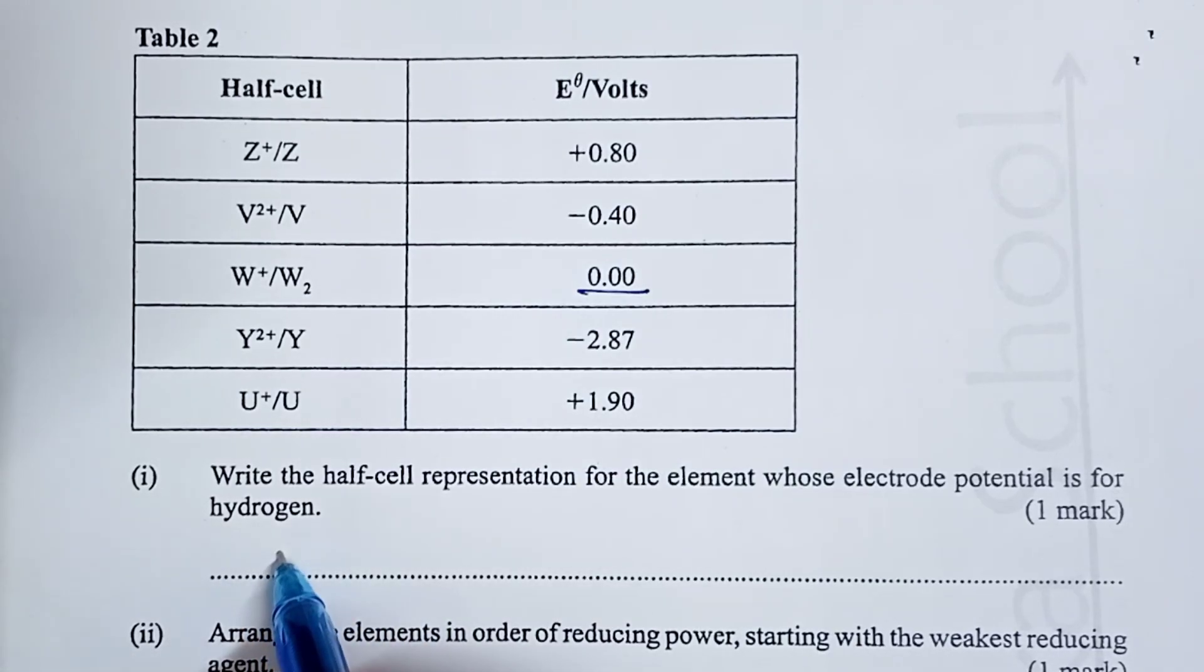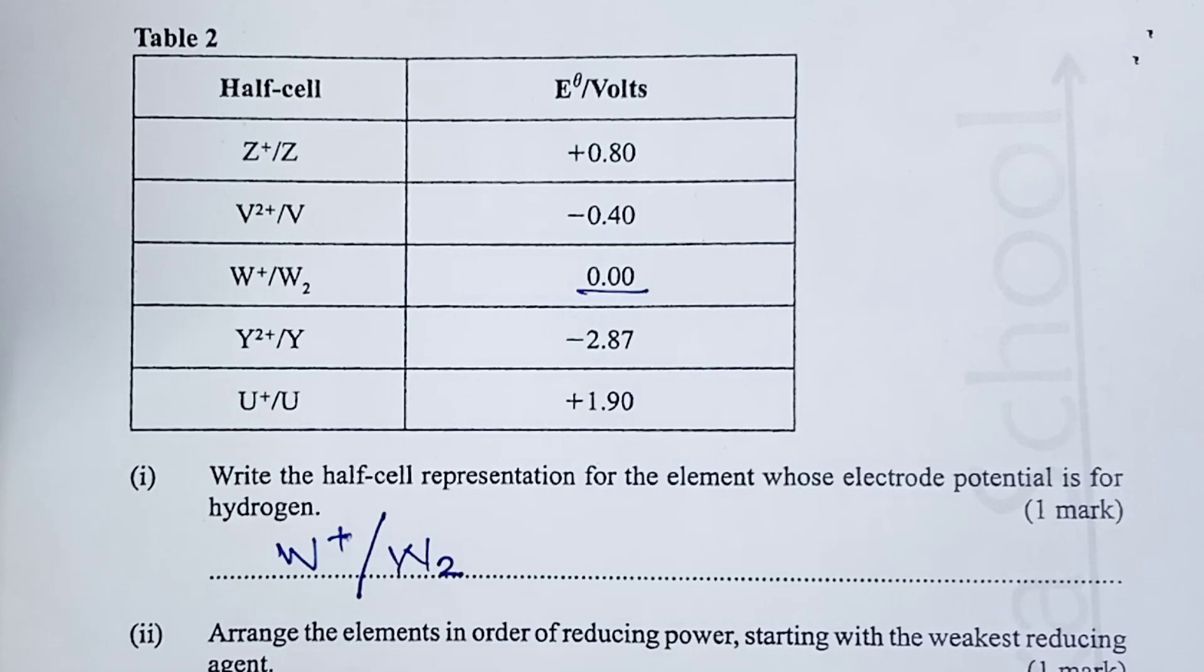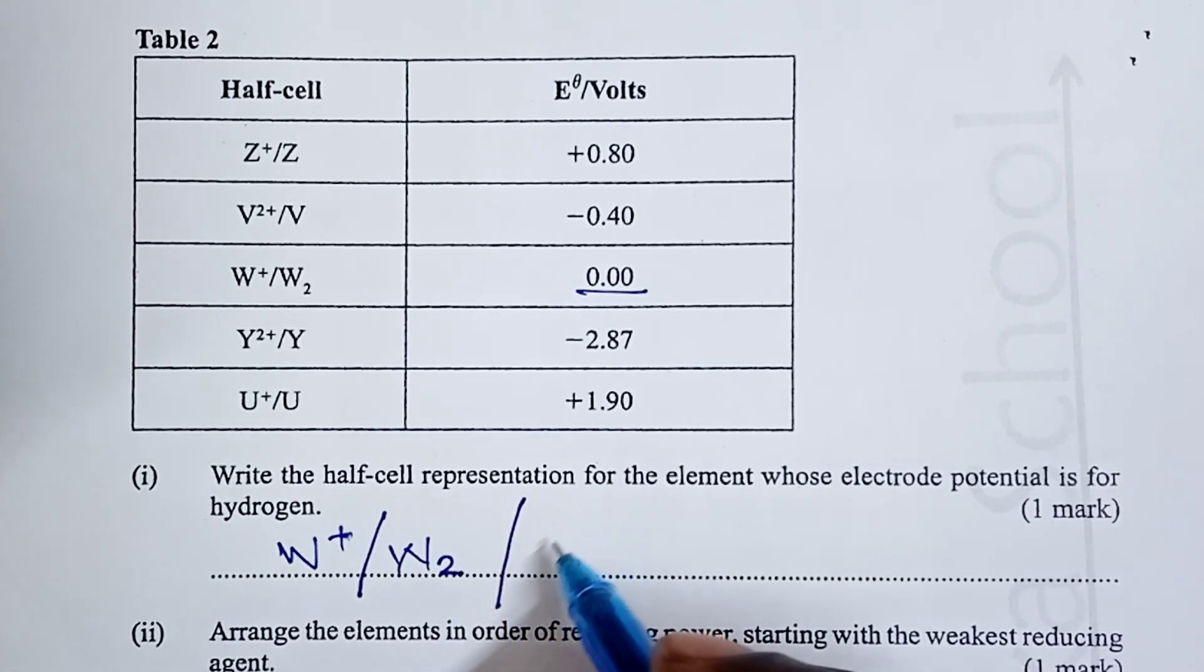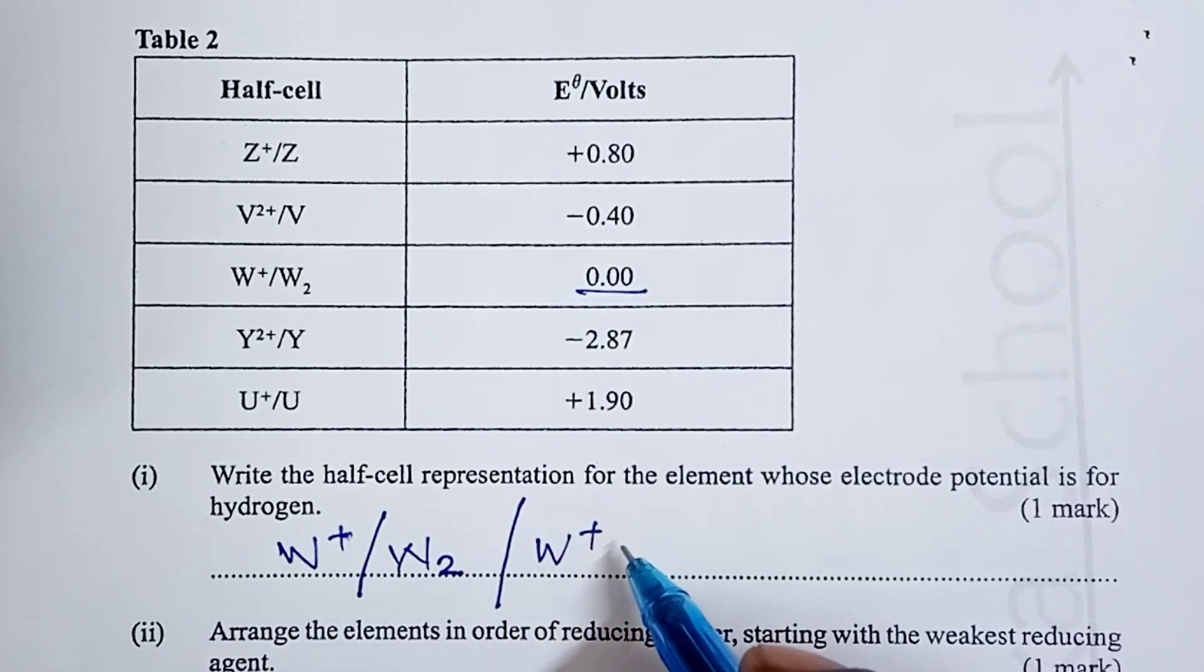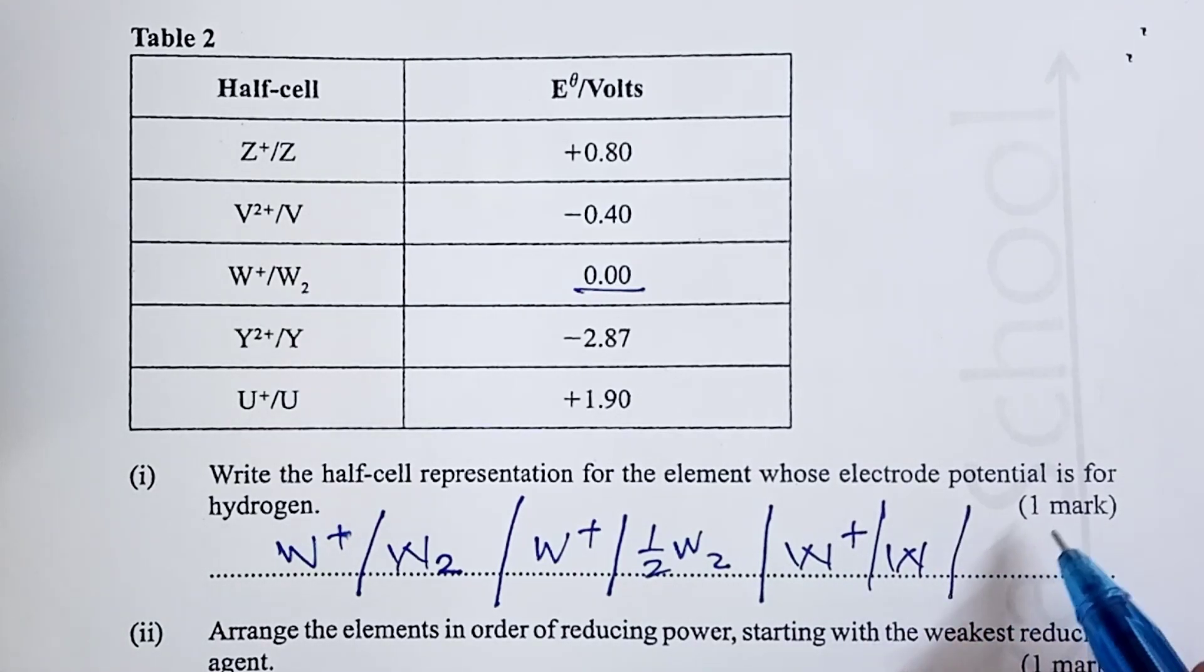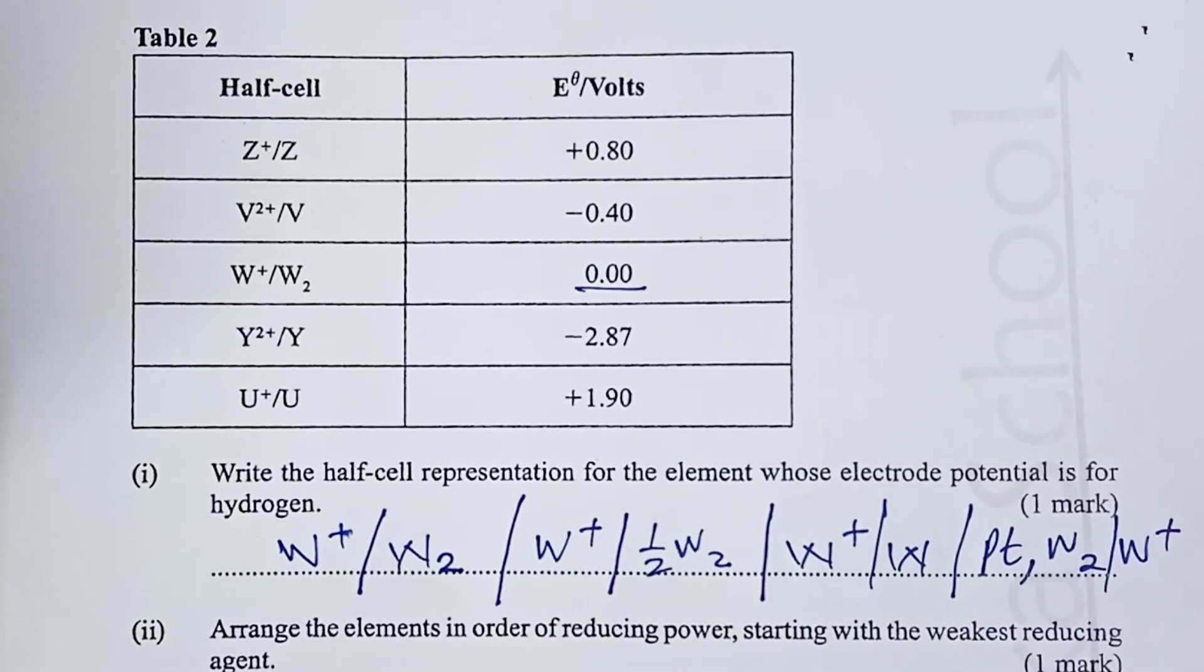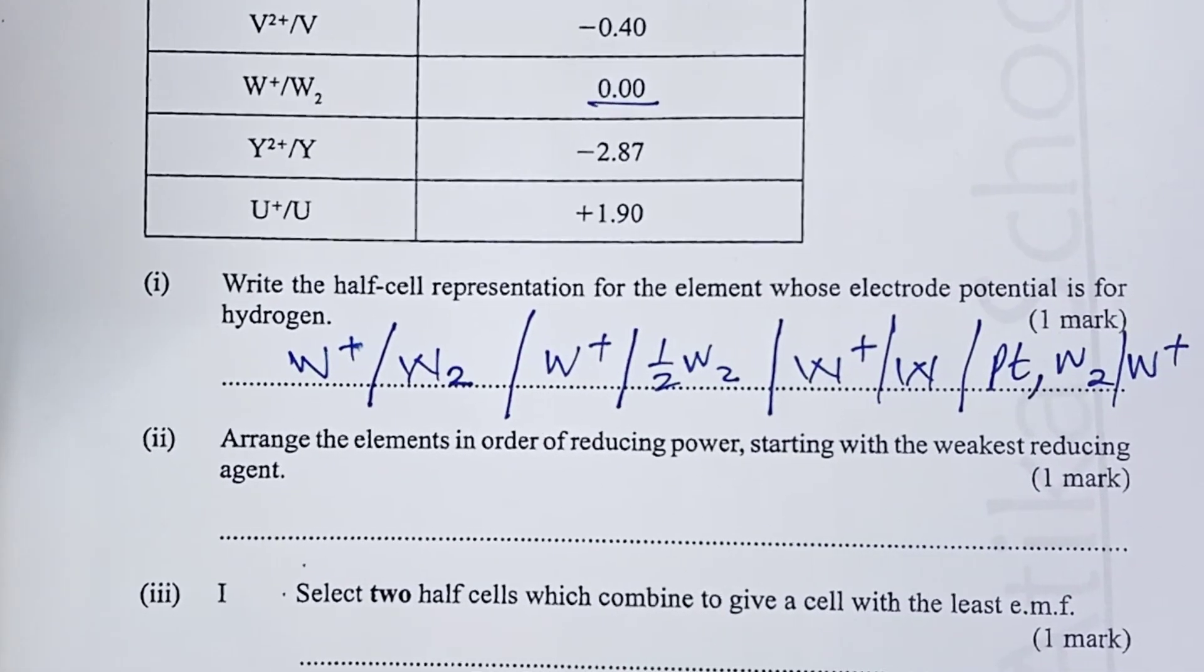The answer expected here was, therefore, W plus W2. Though, the examiner had other options for the answer. If a student wrote W plus and W2 half, that was another answer accepted. The examiner also accepted W plus and W with no two. And, lastly, the examiner even accepted platinum W2, W plus. Any of those would give a student one mark.